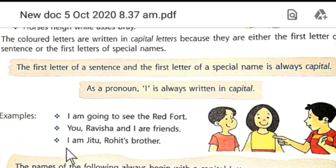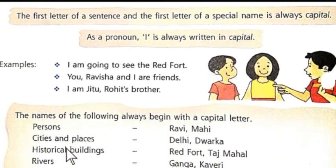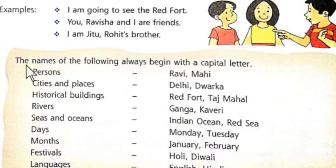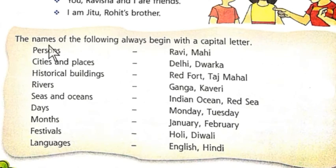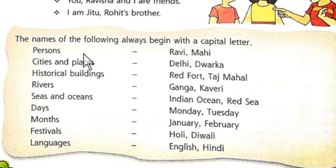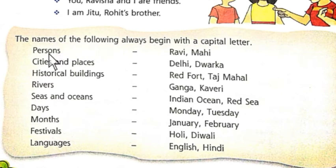Always begin with a capital letter. Mind it — the names of the following always begin with a capital letter. Names of persons are written in capital letters — for example, Ravi, Mahi. Names of cities or places are also written in capital letters — for example, Delhi, Dwarka.